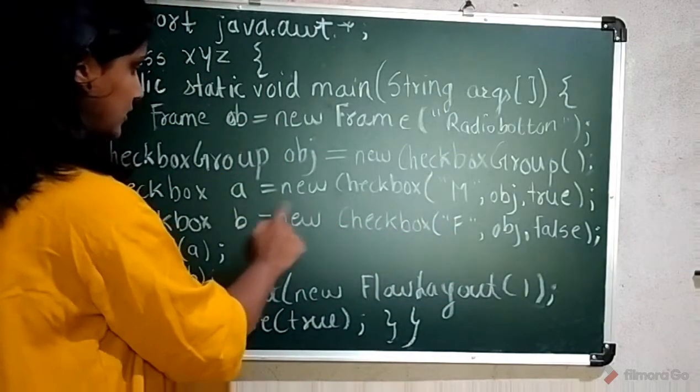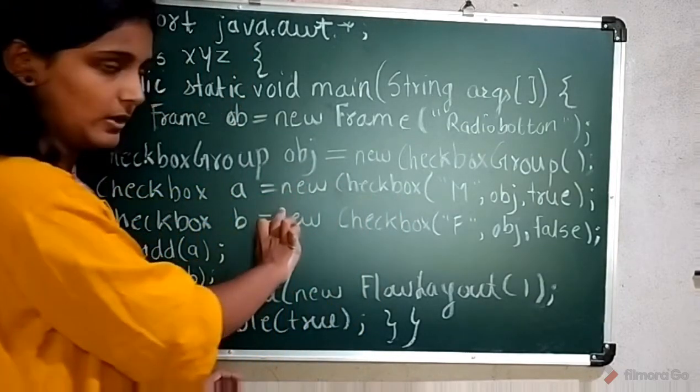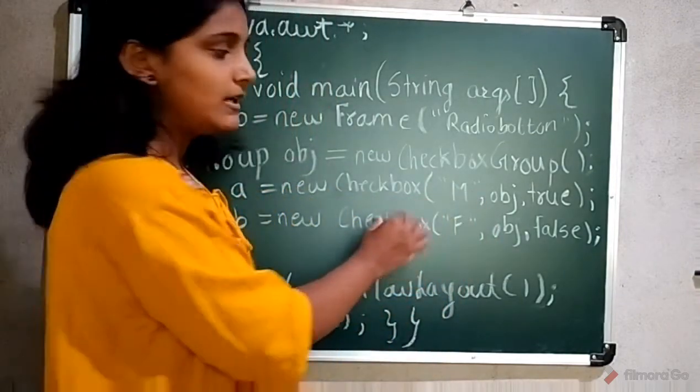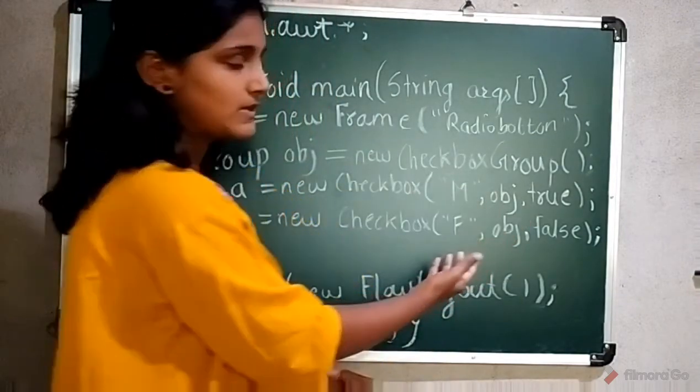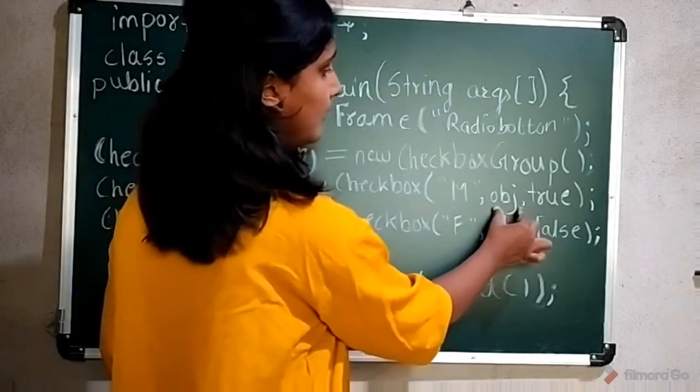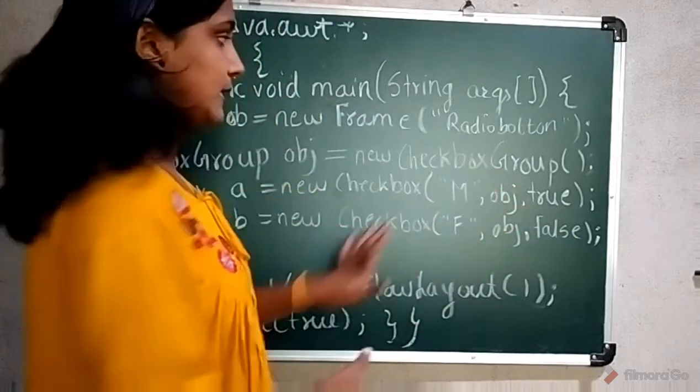Here I created a new checkbox. I have created two checkboxes. I have passed m, that means it will be the label just to the left side of the checkbox. Here obg, this is the object of checkbox group.